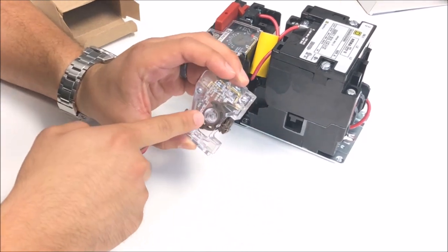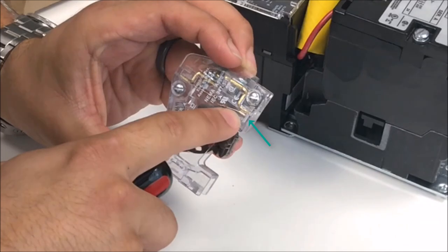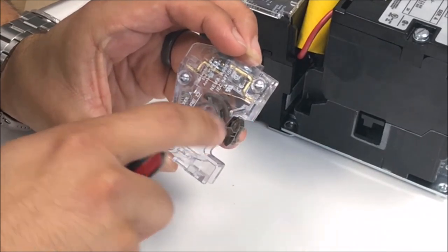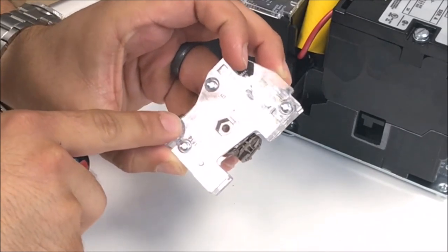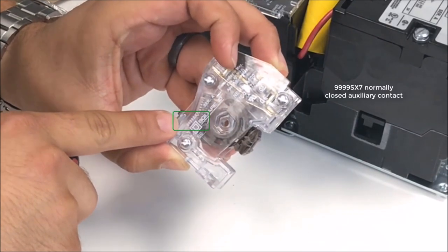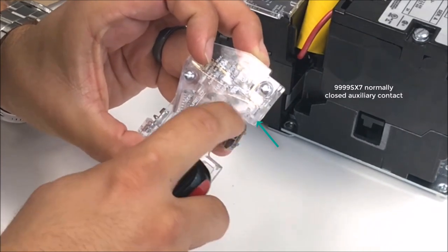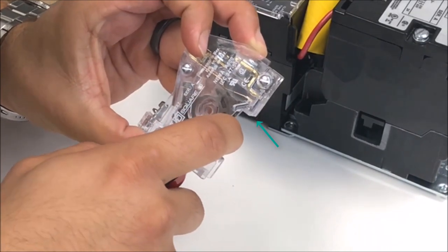These blocks are transparent so you can actually see if the device is normally closed or normally open. They have the printed part number on the device. This one's a 9999 SX7 which is a normally closed. You can see the closed contact here. Operate the device, it opens up.